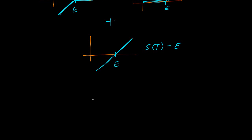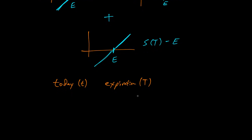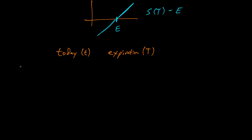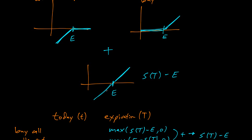Now we can do a diagram. Today, time lowercase t, and expiration capital T. We buy the call and write the put. At expiration, buying the call has max of S of T minus E comma zero. Writing the put has max of E minus S of T comma zero. We already know these added together gives S of T minus E, just because of this diagram.